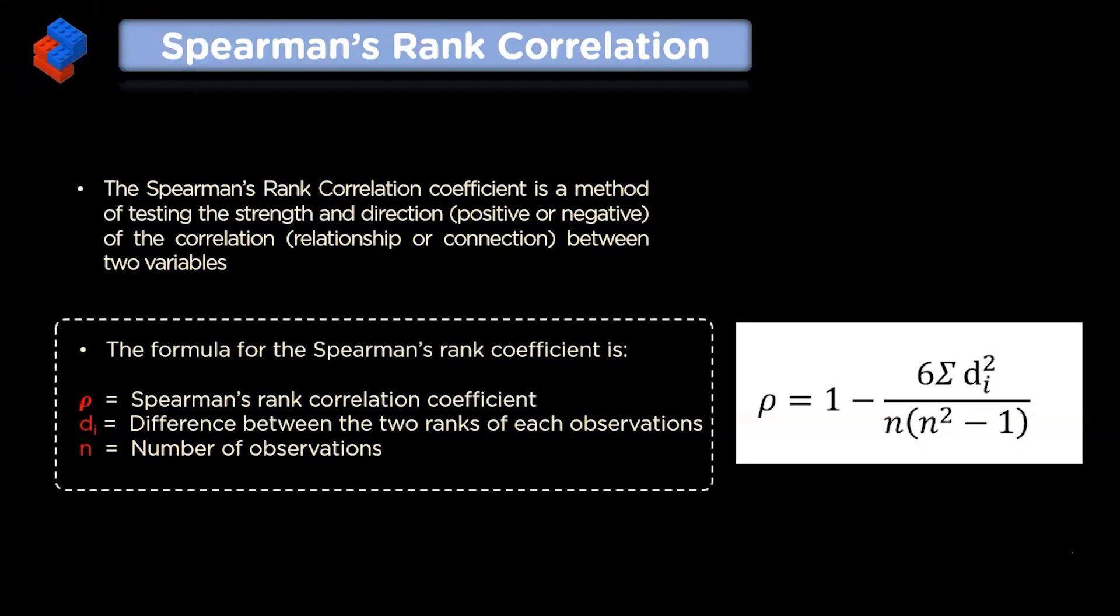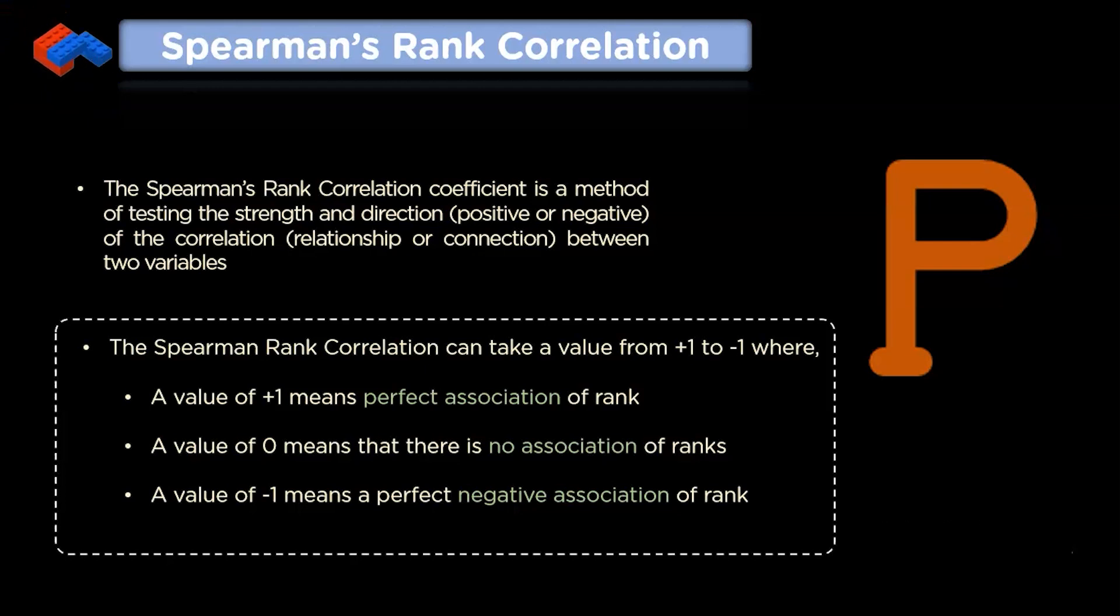The formula to calculate the rank coefficient is shown here, where rho is the Spearman Rank Correlation Coefficient, di is the difference between the two ranks of each observation, and n is the number of observations. The value of the coefficient will always be in the range of plus 1 to minus 1, where the plus 1 will show the perfect association of the rank and the minus 1 will show the negative association of the rank. If the value comes out to be 0, it means that there is no association between the ranks.